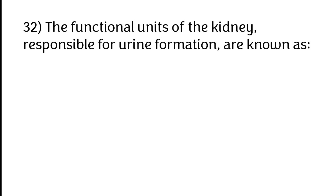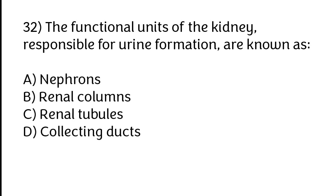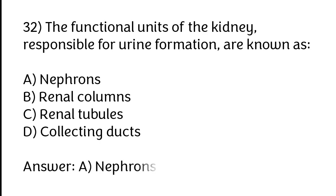The functional units of the kidney responsible for urine formation are known as: A) Nephrons, B) Renal columns, C) Renal tubules, D) Collecting ducts. The correct answer is option A, nephrons.